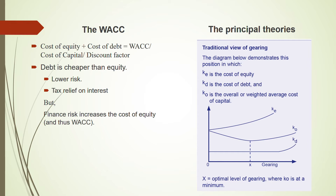The cost of capital is minimum at X because after that, as debt increases, the cost of equity increases and the cost of capital starts rising too. K0 sits between the cost of equity and the cost of debt, because cost of equity is always the highest and debt is cheaper, so WACC falls between them. The WACC line falls and then rises again; where it is lowest is the optimal gearing — this is the traditional view.